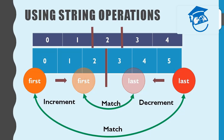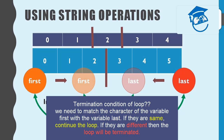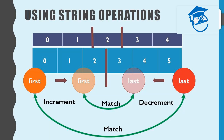To summarize: we have two variables, 'first' and 'last'. 'first' starts at the zeroth index position and 'last' at the last index position. Inside the loop we increment 'first' and decrement 'last', matching the characters at those positions. If they match, we continue the loop; if not, we terminate and say the word is not a palindrome. When 'first' and 'last' reach the middle point, we say the word is a palindrome.